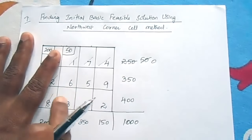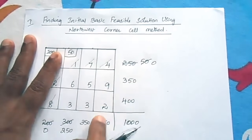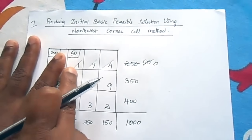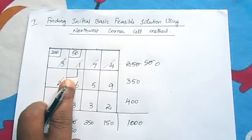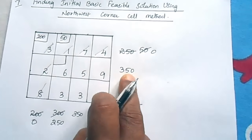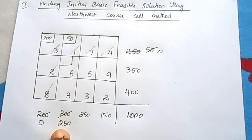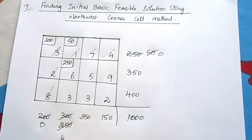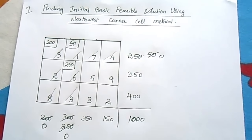Now we have 2 rows and 3 columns. The Northwest corner is the second row, second column. The row value is 350 and the column value is 250. The least is 250, so allocate 250. The second column becomes 0 and is cancelled. The remaining row balance is 100.